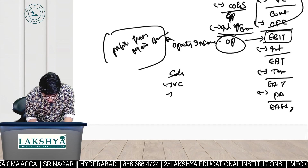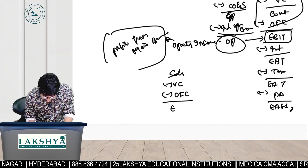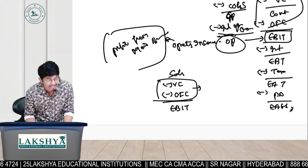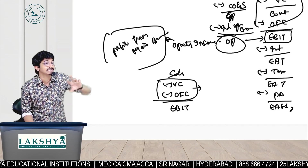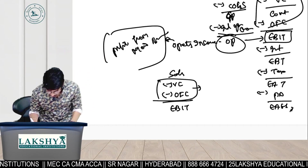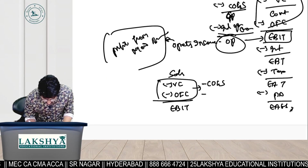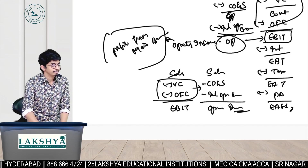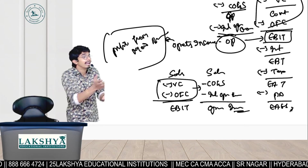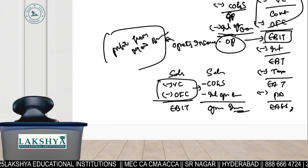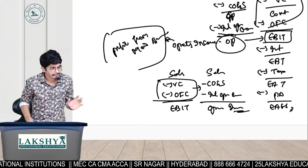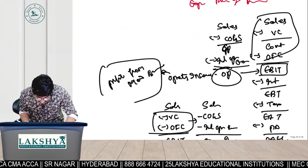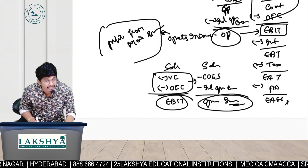In the main income statement format: sales minus variable cost minus operating fixed cost gives EBIT. The variable cost and operating fixed cost together are operating expenses, which split into direct operating expenses (cost of goods sold) and indirect operating expenses. Ultimately we get operating income, which equals operating profit, which equals EBIT.